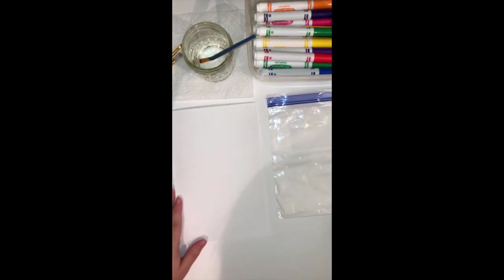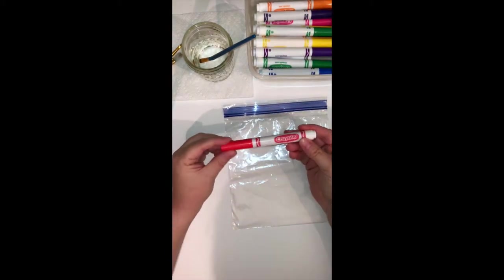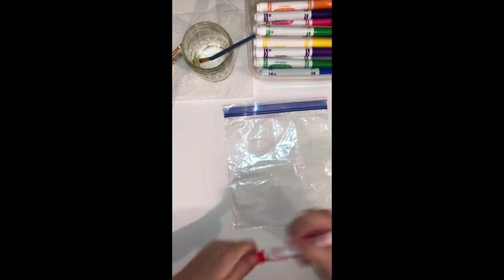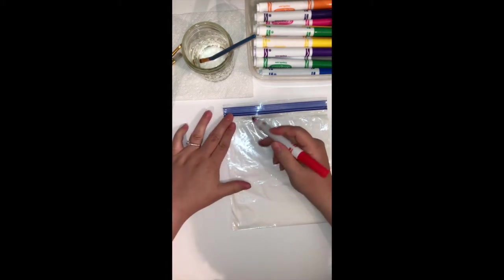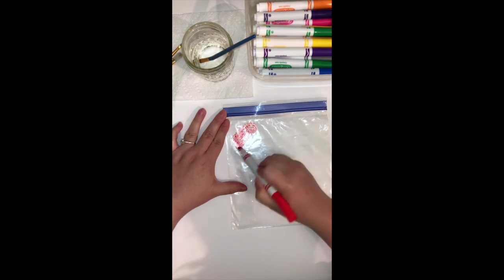To get started, you're first going to take your plastic bag and choose a color marker. I've chosen the red. I'm going to take the cap off and I'm just going to start coloring right onto the plastic bag.